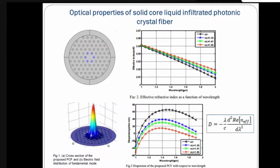The effective refractive index decreases with wavelength because as wavelength increases, light confined in the core region tries to spread out into the cladding, meaning the effective refractive index decreases and there is confinement loss. Whenever wavelength is increased there will be a loss in the fiber, and therefore the effective index decreases with respect to wavelength. The effective mode index of the fundamental mode is calculated by the finite element method using COMSOL Multiphysics software.